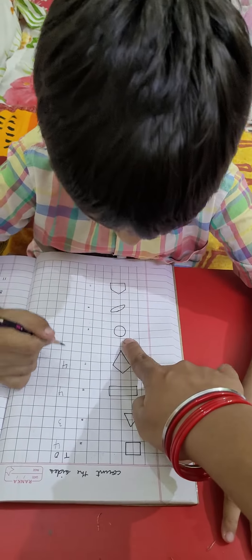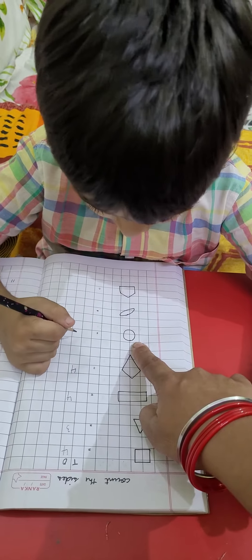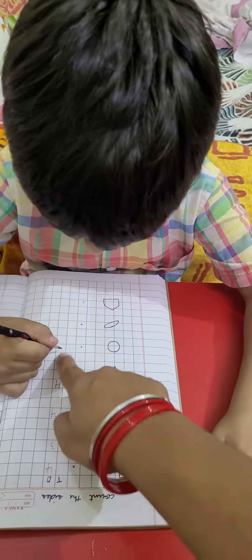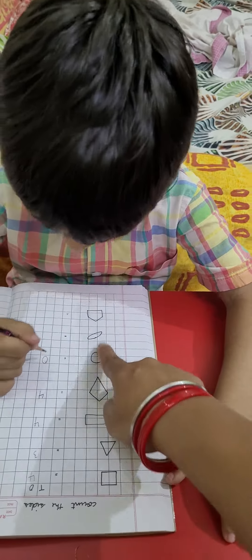Very nice. Which shape is this? Circle. How many sides? Very nice. Now which shape is this?